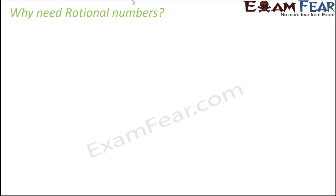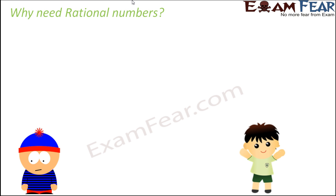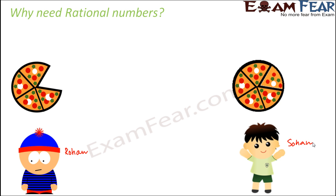For that, let me give you an example. We have two kids named Rohan and Sohan. Both of them are hungry and they are both given one pizza each. Now how much did Rohan eat? Rohan ate one-fifth of the pizza — that is, one slice out of five slices. What about Sohan? Sohan ate the complete pizza, meaning all five slices.